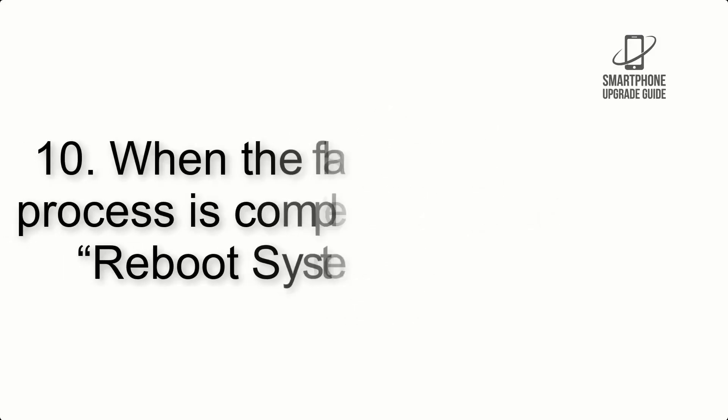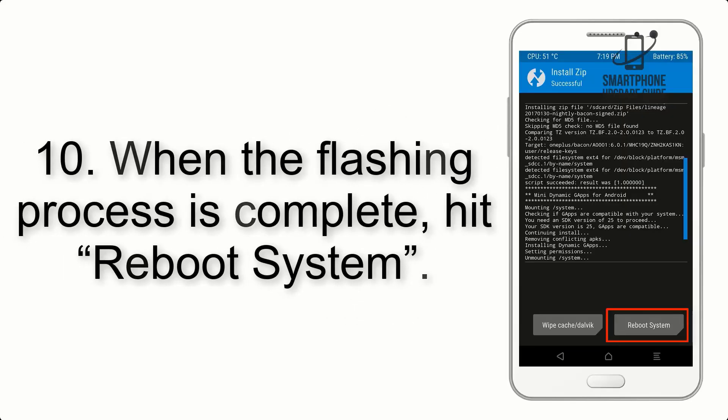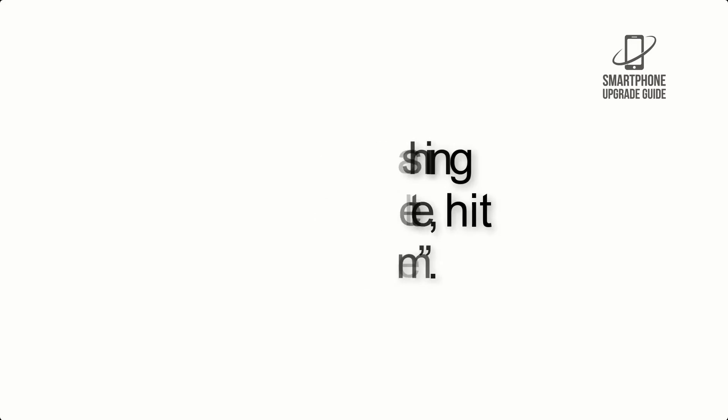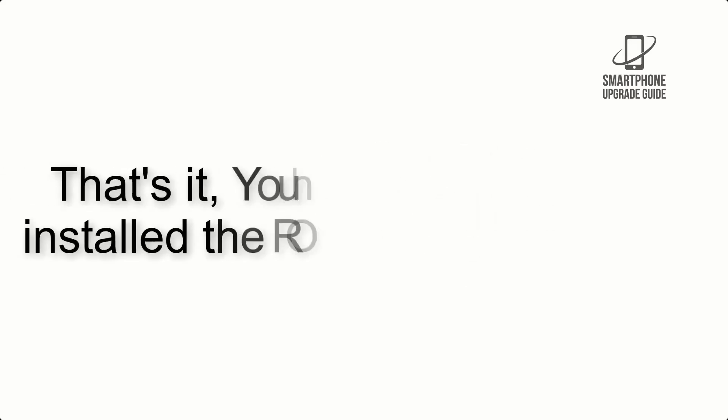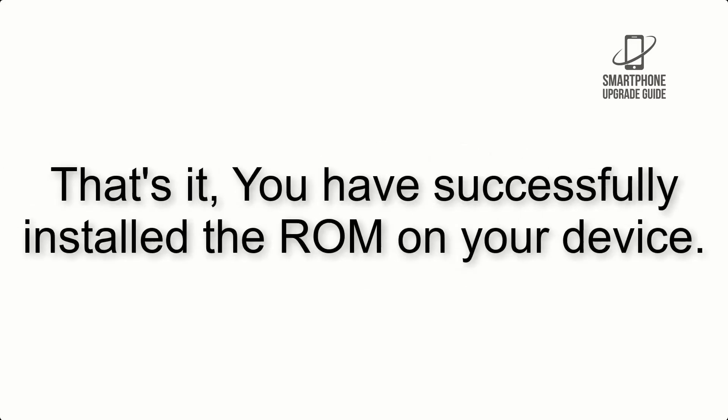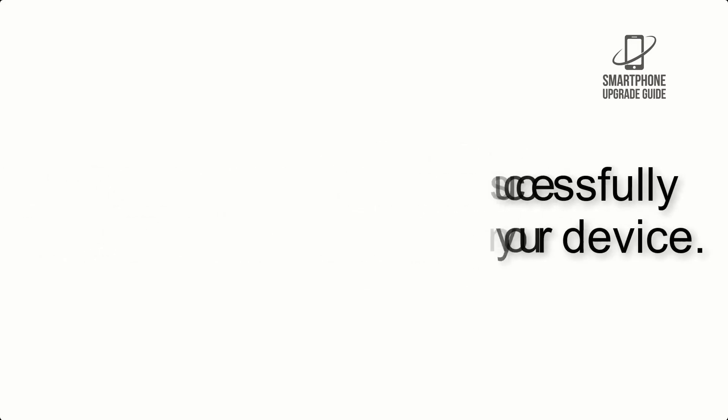Step 9: after GApps flashing completes, select Wipe Cache and Dalvik from the bottom left side of the screen and swipe to wipe. Step 10: when the flashing process is complete, hit Reboot System. That's it — you have successfully installed the ROM on your device.